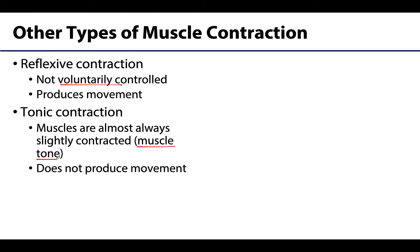Functions of tonic contractions include stability of joints and maintenance of posture. Muscle tone can be lost — it can be lost in nerve lesions or damage that result in muscle paralysis, or when an individual is unconscious.